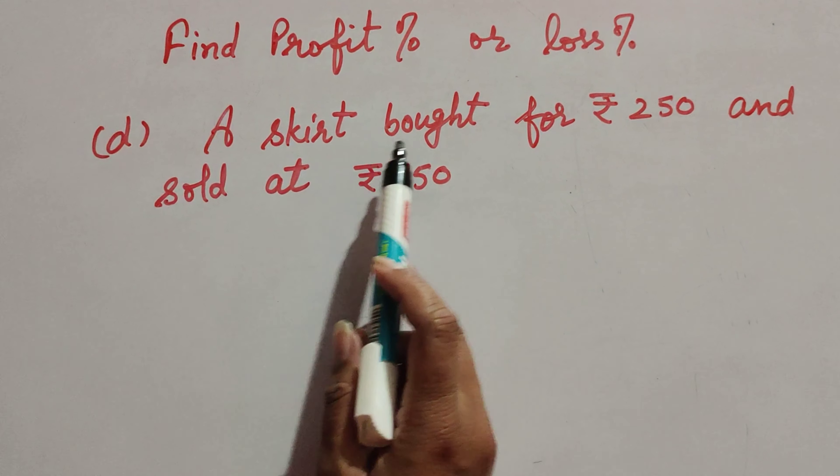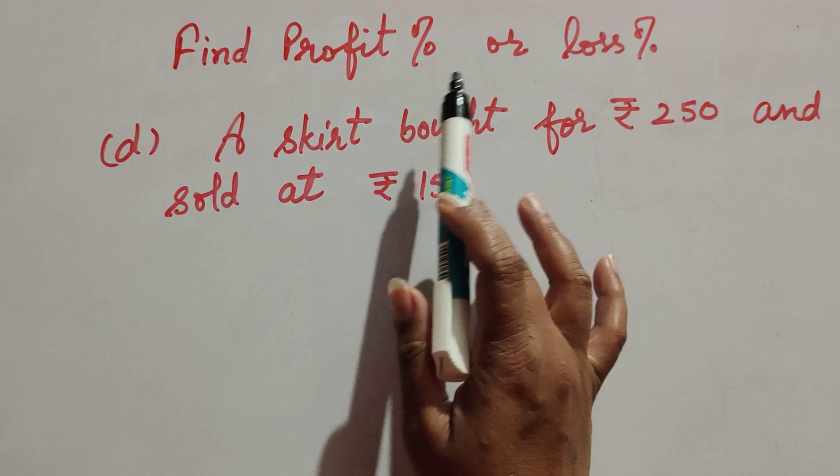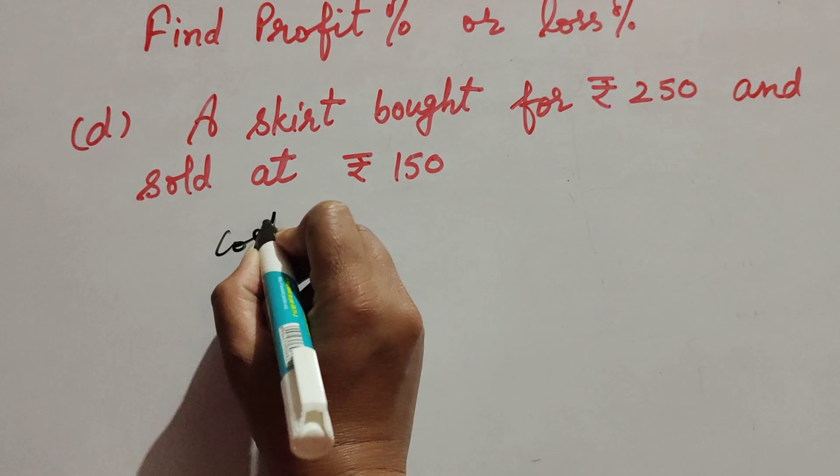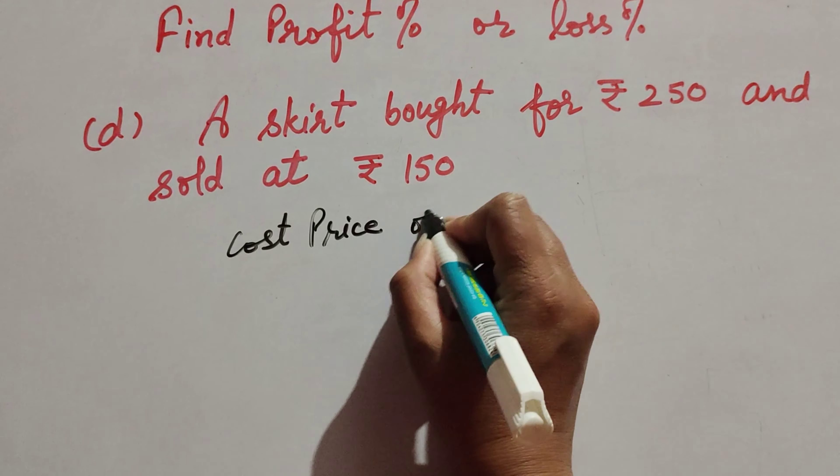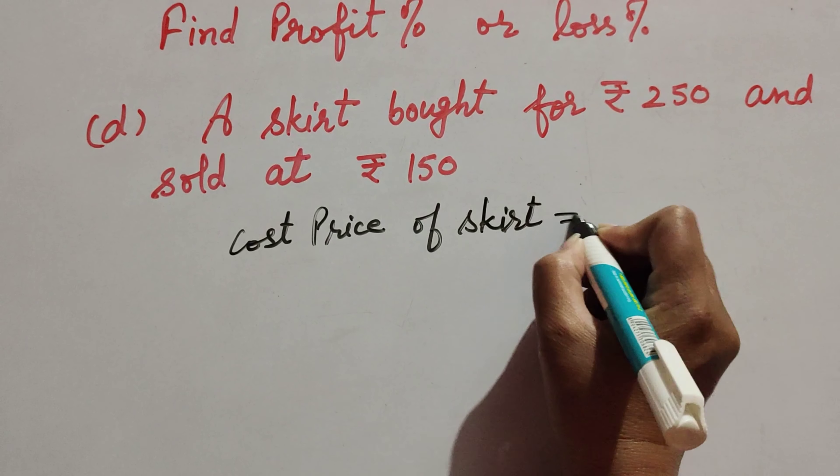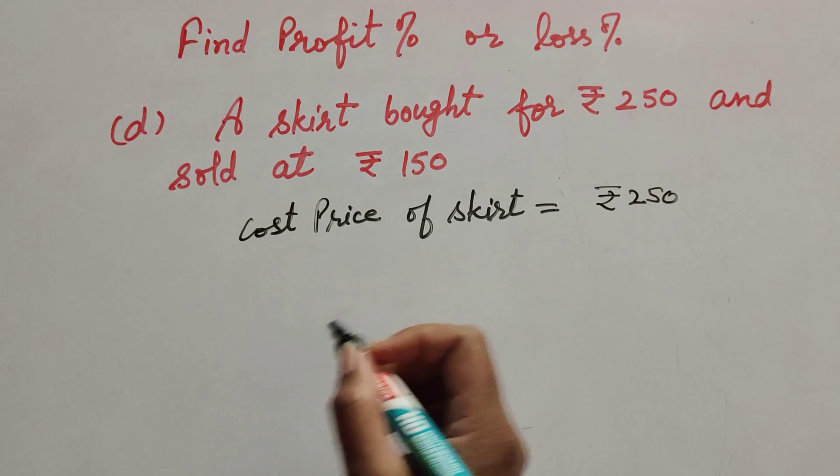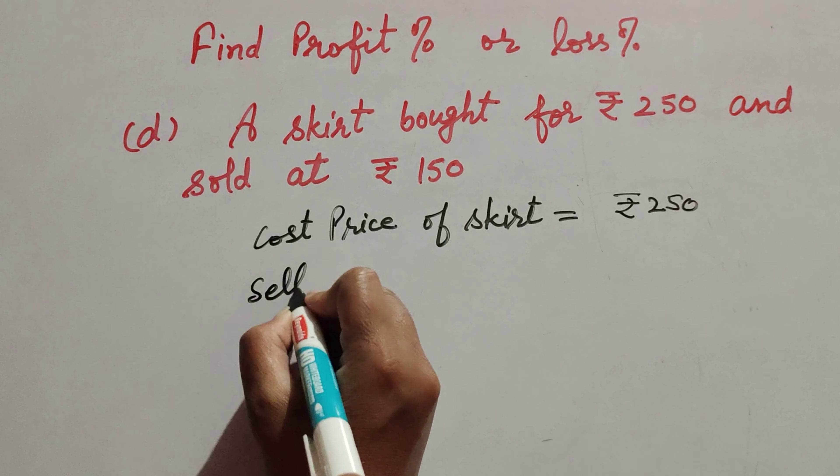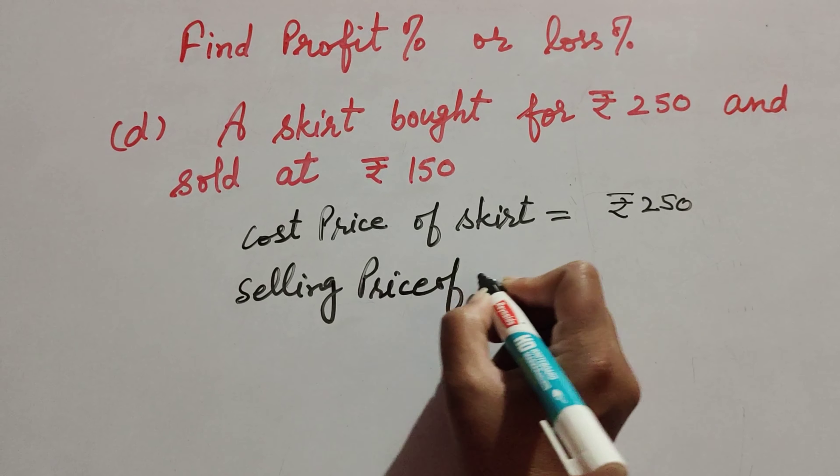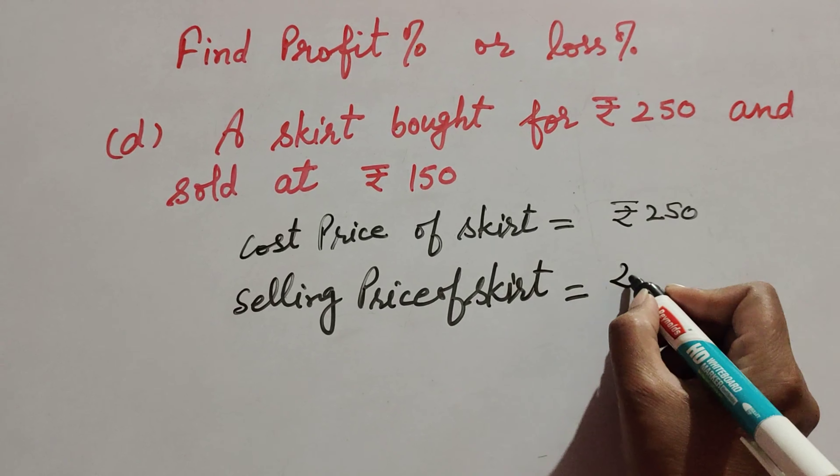A skirt bought for rupees 250 and sold at rupees 150. So in this question we find profit percent or loss percent. Given is the cost price of skirt which is equal to rupees 250, and selling price of skirt is equal to rupees 150.